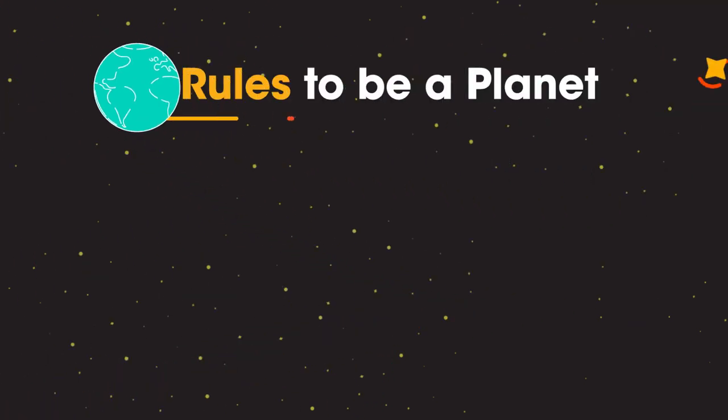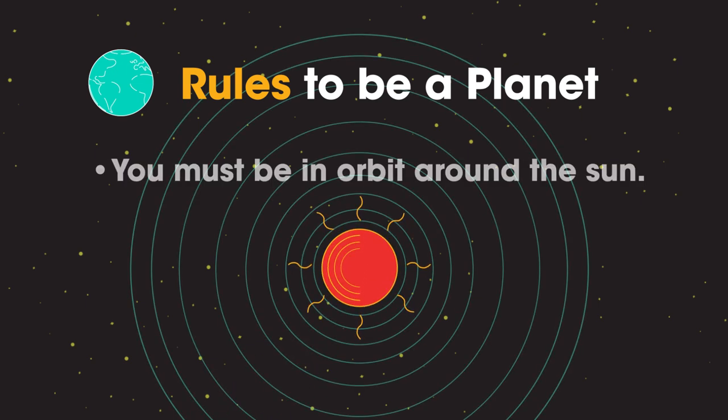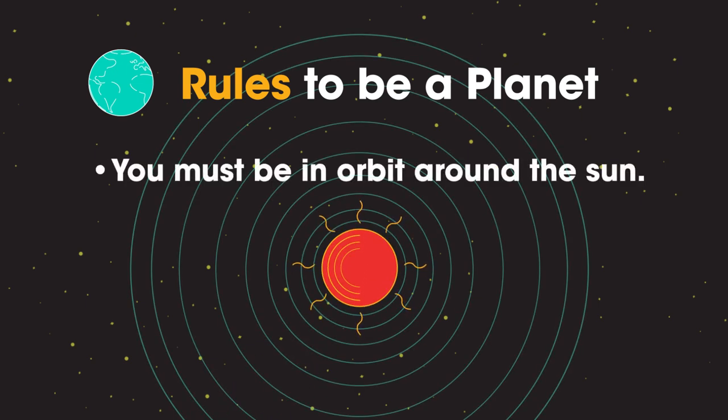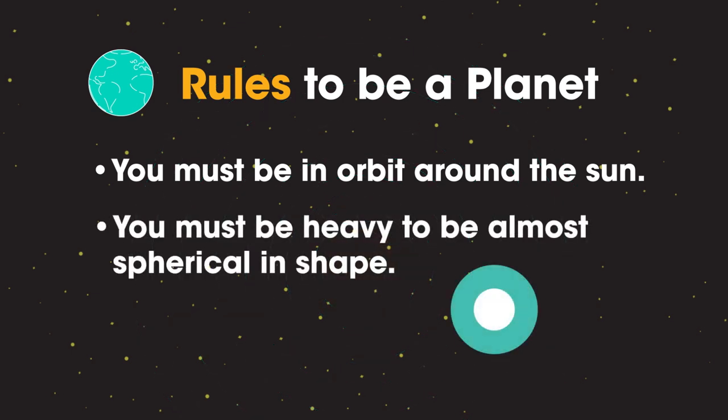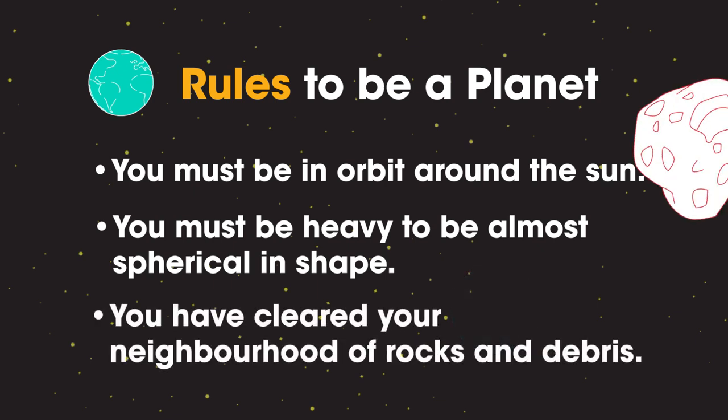There are certain rules to be a planet. Firstly, you must be in orbit around the Sun. Secondly, you must be heavy enough to be almost spherical in shape. And thirdly, you have cleared your neighborhood of rocks and debris.